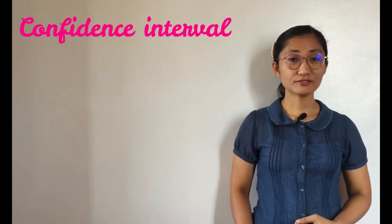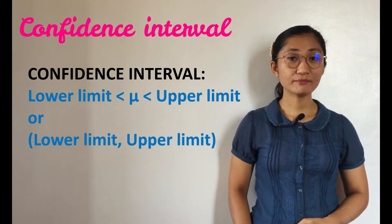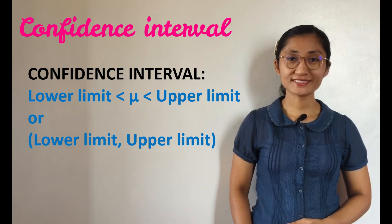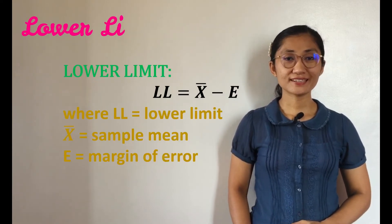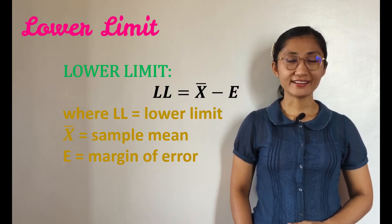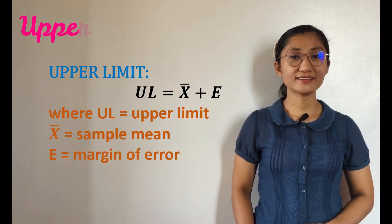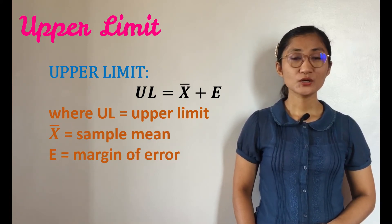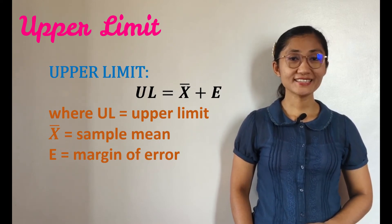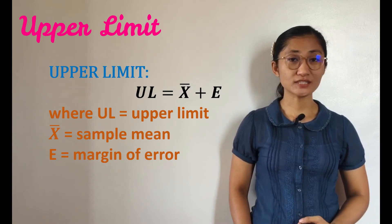We write confidence interval this way: population μ is greater than the lower limit but less than the upper limit, or written as (lower limit, upper limit). The lower limit is obtained through the formula LL equals X-bar minus E, while the upper limit is obtained by the formula UL equals X-bar plus E, where X-bar is the sample mean and E is the margin of error, or the range of values above and below the sample statistic.